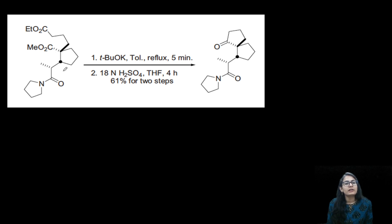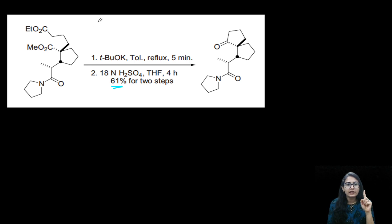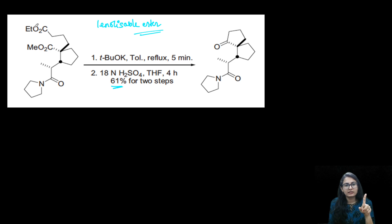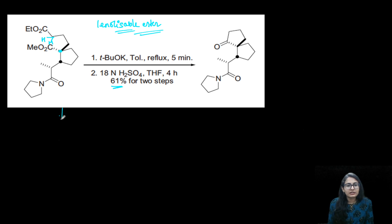So let's see — what do we have? We have two ester groups as always. But here the condition is more favorable — that is why we get 61% of the product. The condition is more favorable because we only have one enolizable ester. The alpha carbon to the other ester does not have a proton. These are carbon-carbon bonds. So only one enolizable ester — now it is a unidirectional reaction.